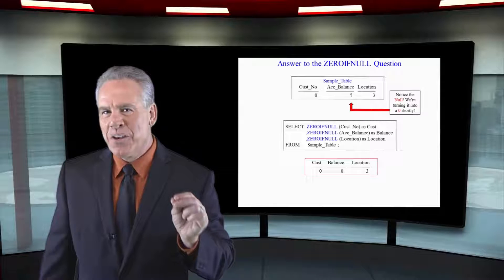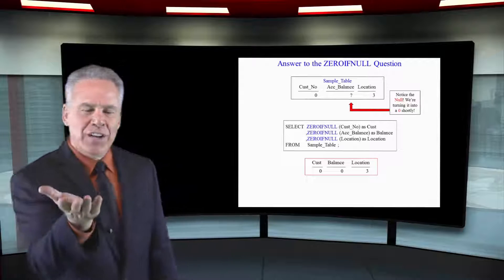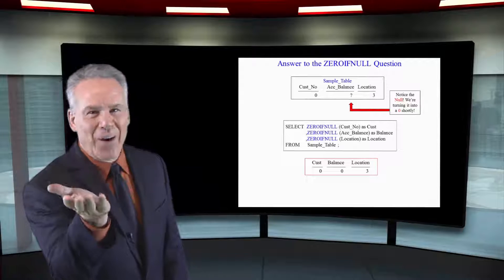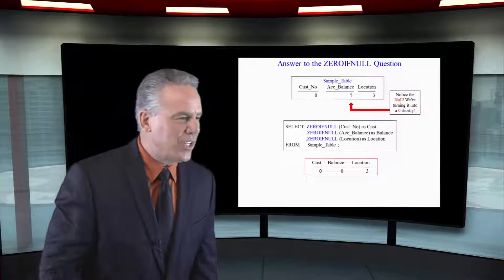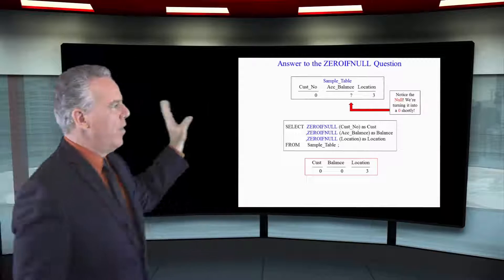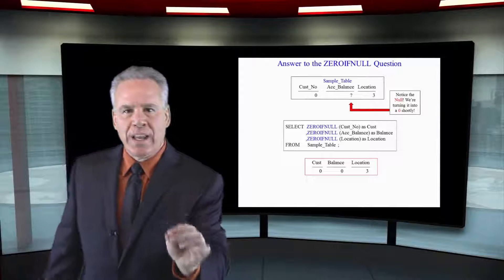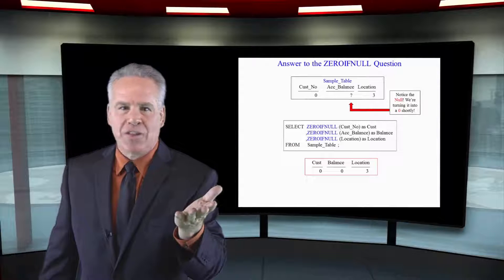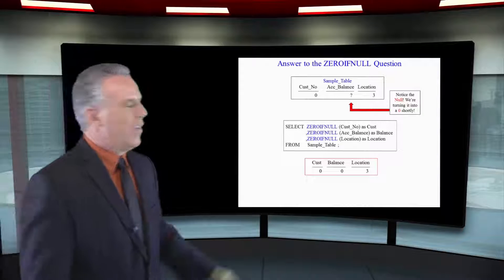The ZEROIFNULL command says: if I interrogate a column and it is null, I'm going to make that a zero. And as you can see here, we said ZEROIFNULL customer number, and that's really a zero. So it's not a null — leave it at a zero.